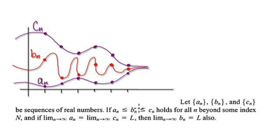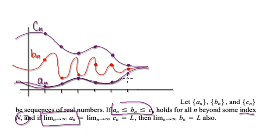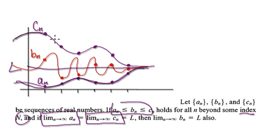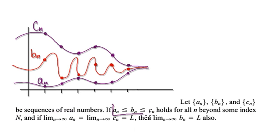So as long as it obeys this beyond some index capital N, if the limit of a_n heads towards capital L, and the limit of c_n also heads towards the same capital L, then the red line being always trapped in between the two lines, we have no choice but to have the same limit, capital L. That's what the squeeze theorem is saying.